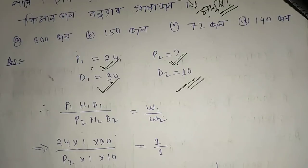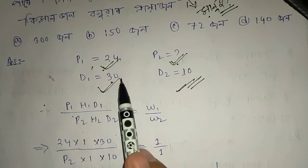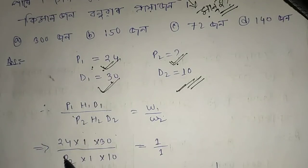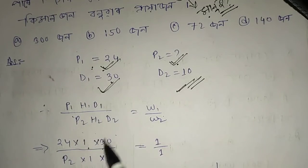If you could solve it for the second person, we had 20 days. So we put it: P1 is 24, H1 is 1, D1 is equal to 30, so we put 30.